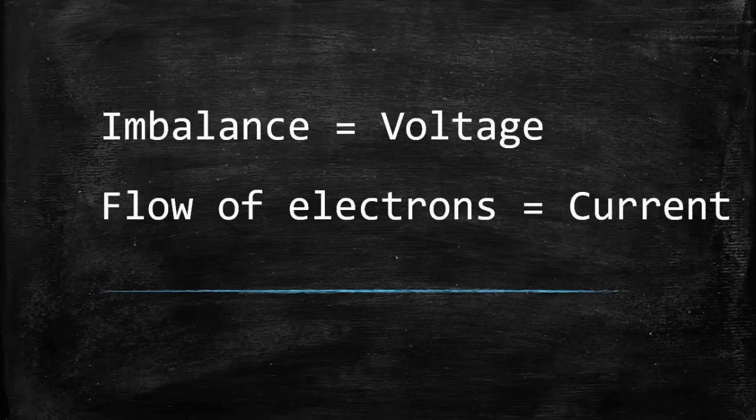In the previous video we saw that when we rub a glass rod with a silk cloth it was creating an imbalance between the electrons, and that imbalance was actually creating the flow of electrons. So is the imbalance the concept known as voltage and the flow of electrons the concept of current? To get the answer, watch the video.